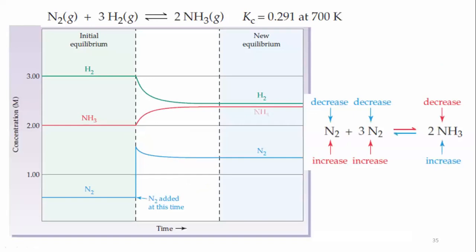I request you to understand the concept here. Let's suppose this is the initial equilibrium condition — the concentration of H₂ is 3 molar, ammonia is 2 molar, and the equilibrium concentration of N₂ is 0.5 molar.